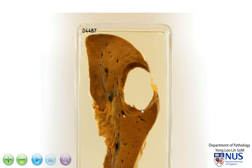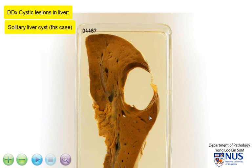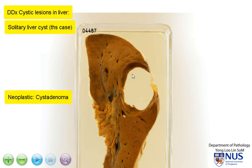The differential diagnosis for cystic lesions in the liver would include a unilocular solitary cyst, as we see in this instance. Another differential diagnosis includes cystadenoma, which is a neoplastic cyst. Grossly, it is quite different because a cystadenoma is often multiloculated and there may also be some papillary areas seen. Cystadenoma carries a risk of carcinoma, and microscopically there may even be areas of adenocarcinoma within cystadenomas.